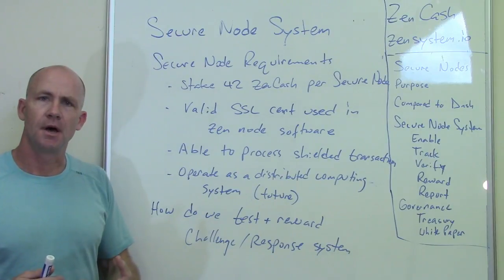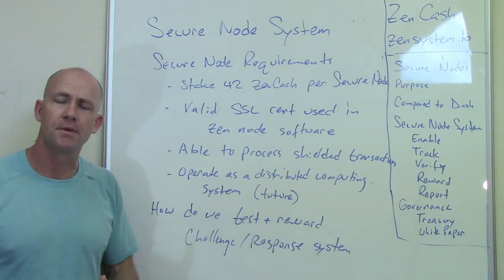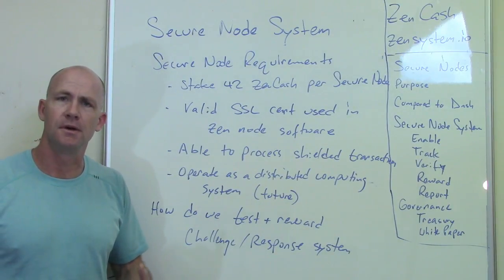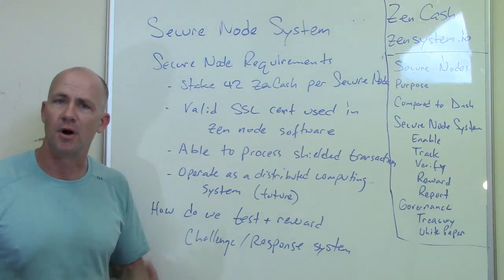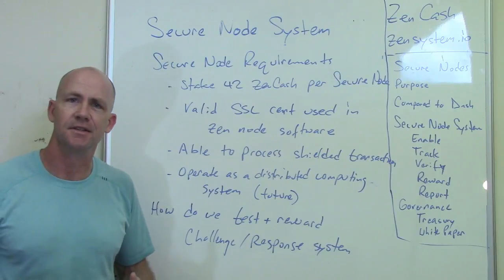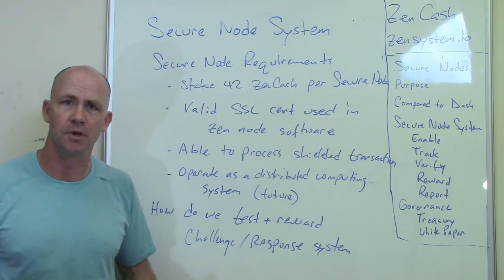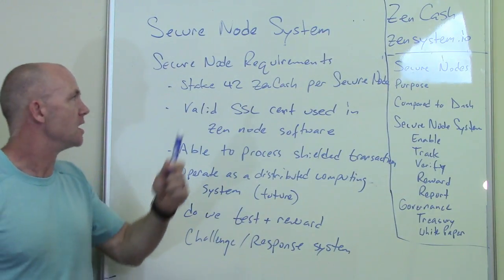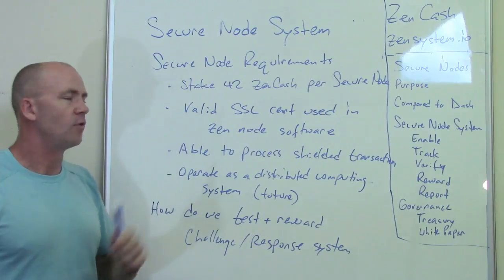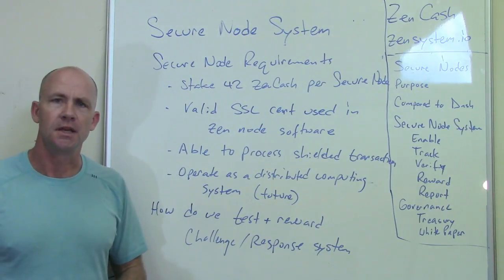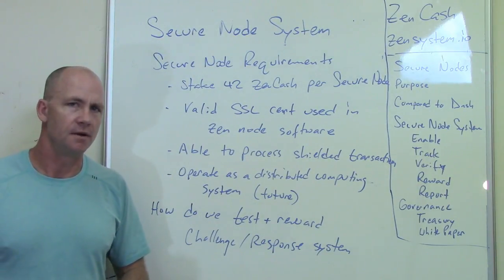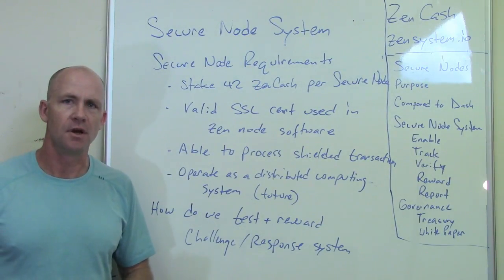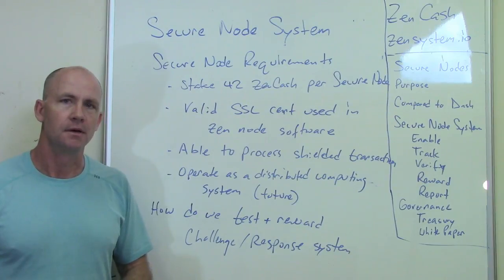Secure node requirements: to meet all the things that I talked about before, we want the people running secure nodes to be bought into ZenCash and what we're doing. So we want them to own some ZenCash — 42 ZenCash is what's required for each secure node that you want to operate.